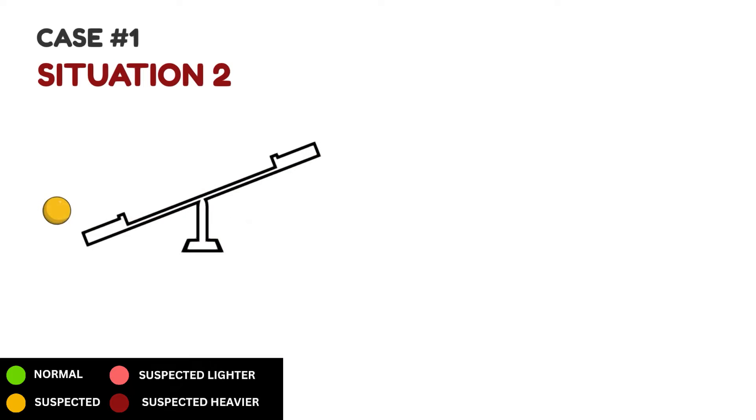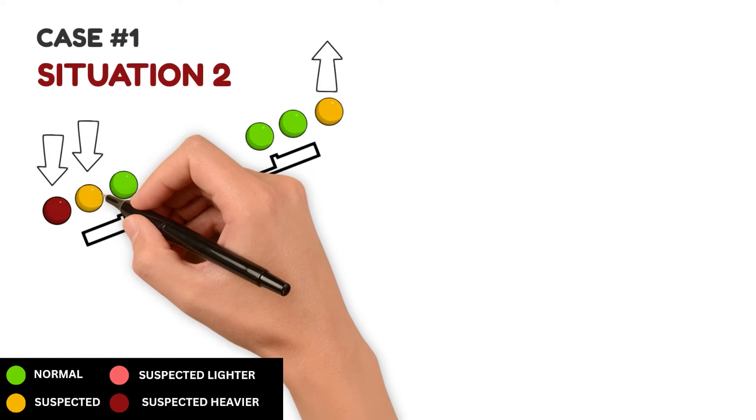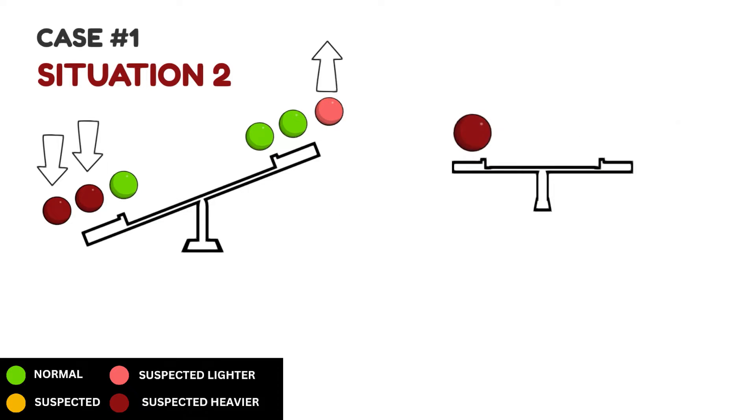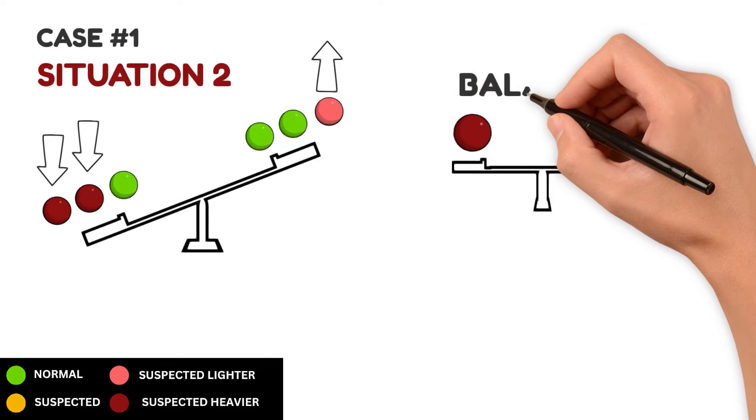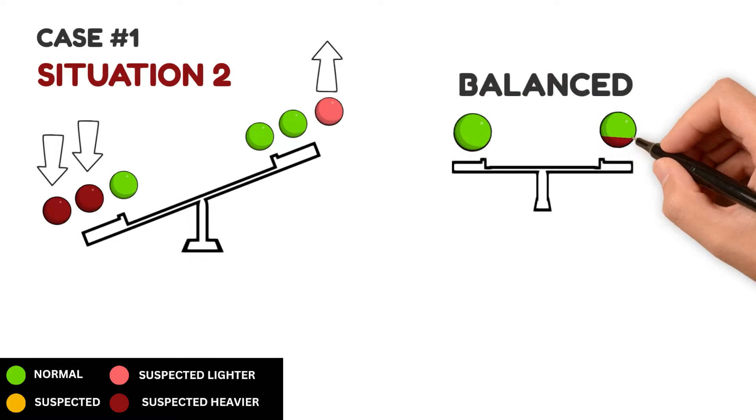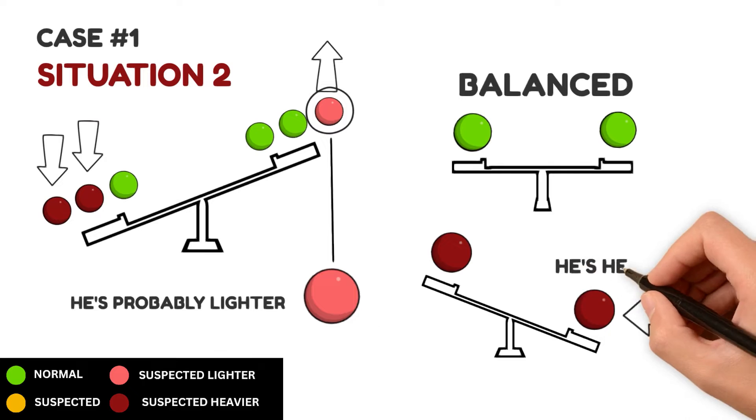Now, let's figure out the second situation. It means that either the person on the right is not as heavy or one of the people on the left is a bit heavier. Let's use the colors to show this and then weigh the two heavier people on the third try. If the scale stays even, it means both of them are regular folks and the lighter person is the one we're looking for. He's probably lighter. If the scale tips, then the side that goes down has the person we're after and he's heavier.